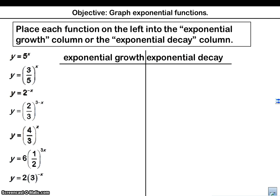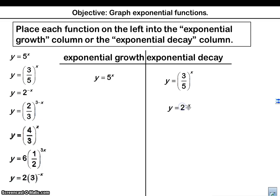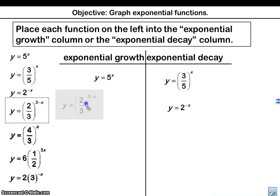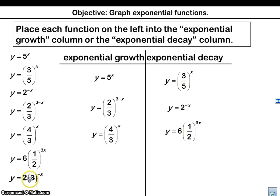Let's take a look at some examples of ones that are growth and decay. Y equals 5 to the x — this is a number bigger than 1, so that's going to be growth. 3 fifths to the x — that's decay because 3 fifths is less than 1. 2 to the negative x — that's decay because of the negative power. 2 thirds to the 3 minus x — this negative x is going to flip 2 thirds and make it 3 halves, which is bigger than 1, so that's growth. 4 thirds to the x is bigger than 1, so that's growth. 1 half to the 3x is decay because of the 1 half. 3 to the negative x is also decay because of that negative power.